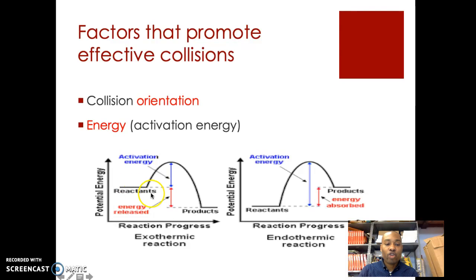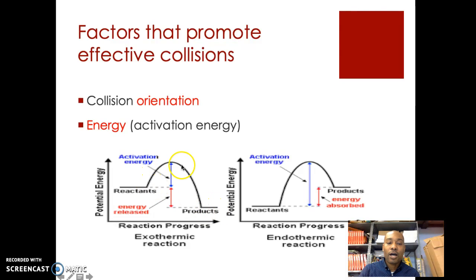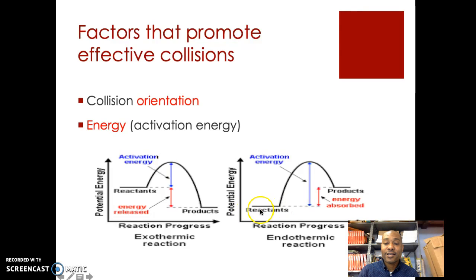This diagram here is called a potential energy diagram. The first diagram is for an exothermic reaction, showing that the potential energy of the reactants is higher than the potential energy of the products. The hump on the line represents the activation energy — you need this amount of energy for the reaction to proceed. For an endothermic reaction, where energy is absorbed, the potential energy of the reactants is less than the potential energy of the products. You should be familiar with the general shapes of these diagrams, which describe whether a reaction is exothermic or endothermic.